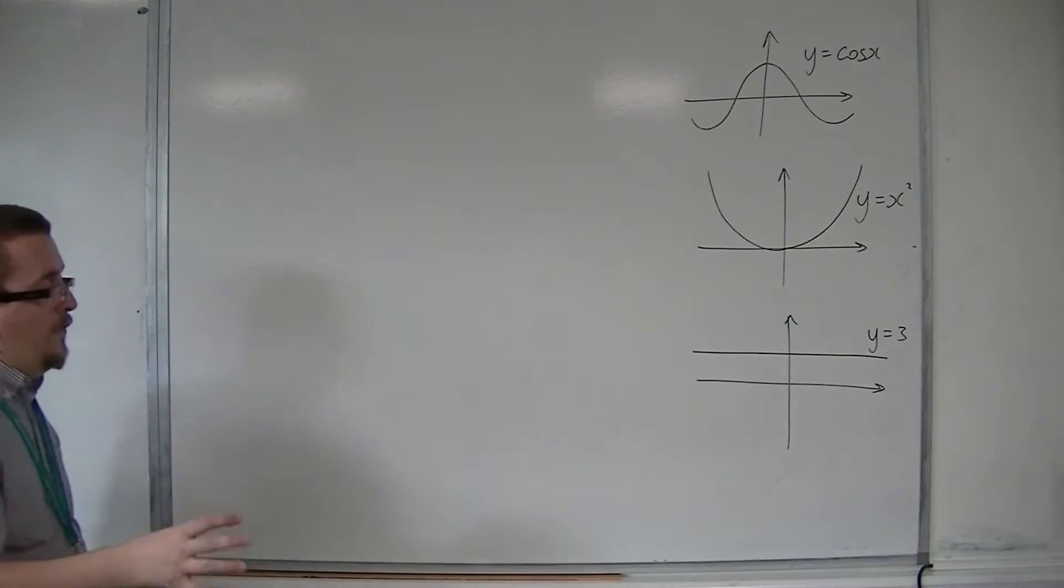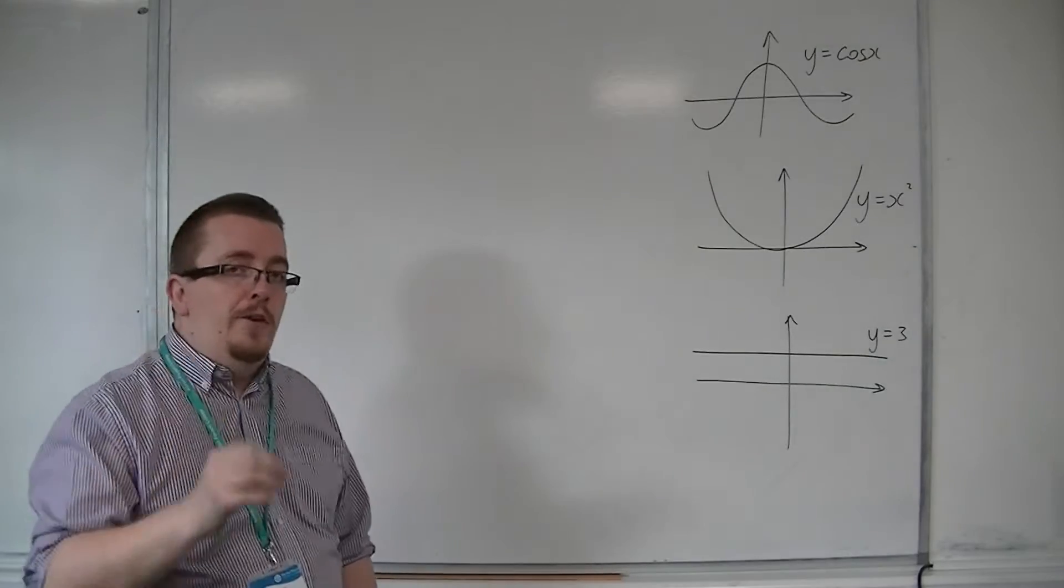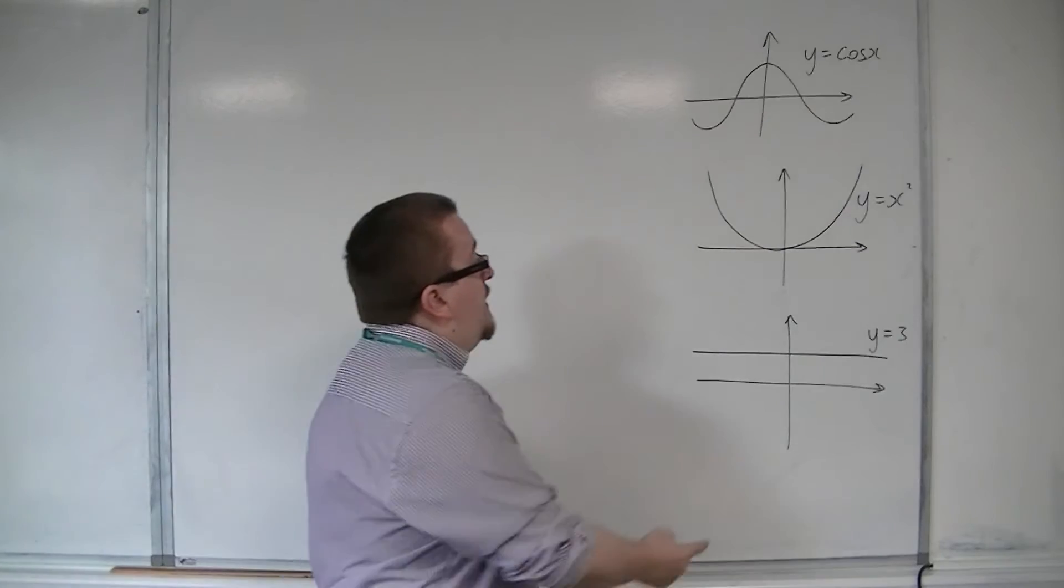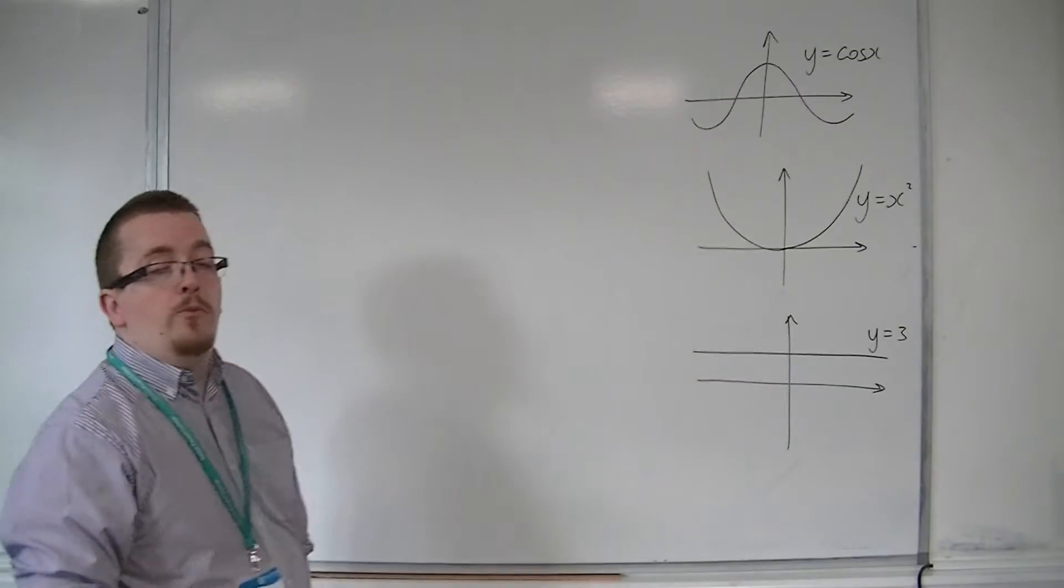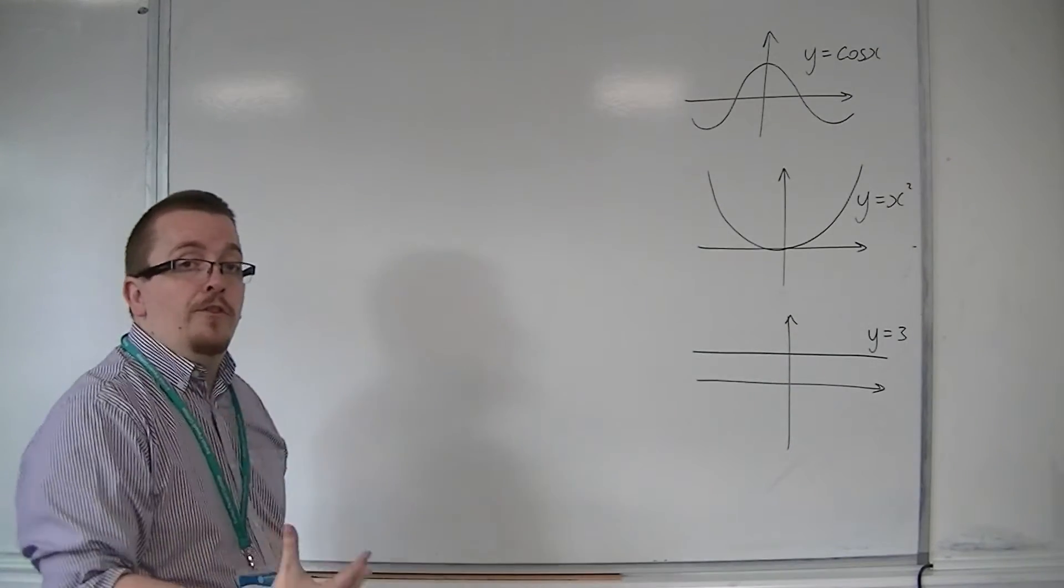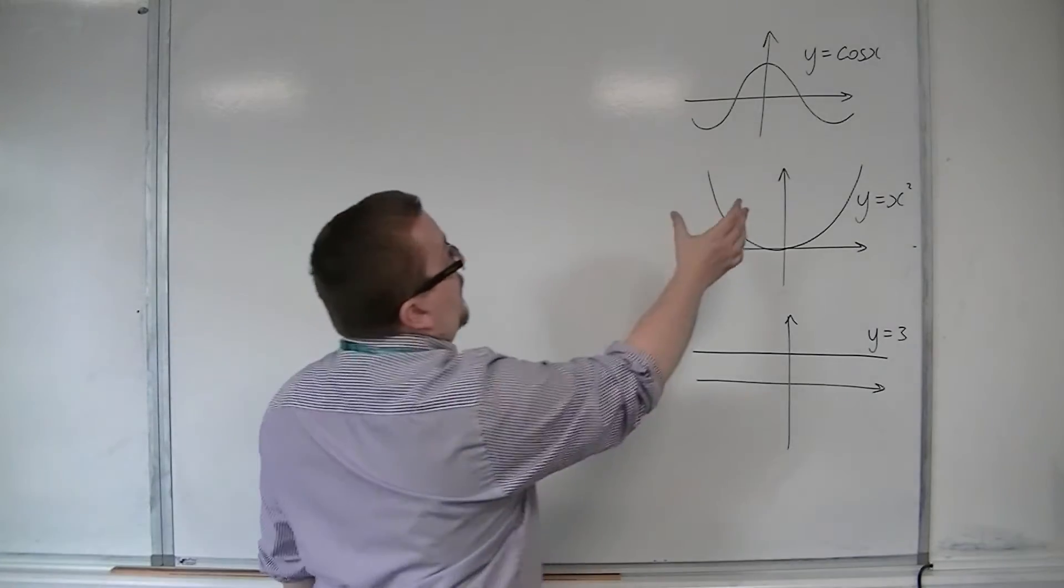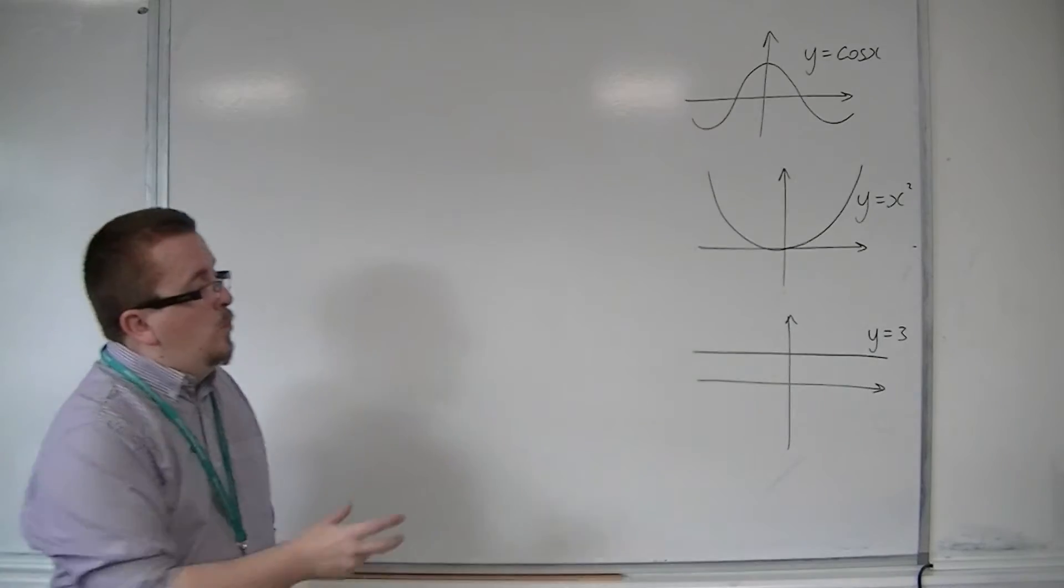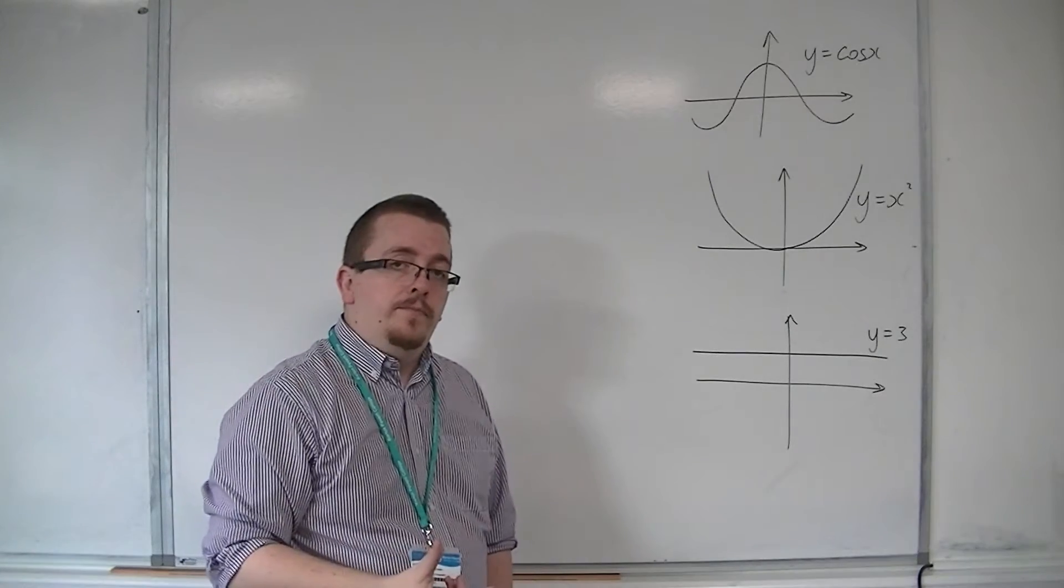So, in this video, we're going to look at even functions, and we're going to identify what are the key features of these. So, these three graphs represent three even functions. We have y is equal to cos of x, y is equal to x squared, and y is equal to 3.